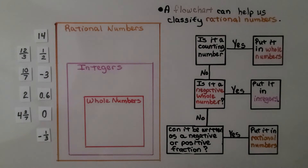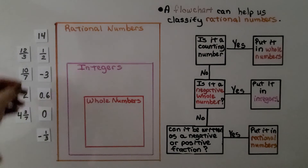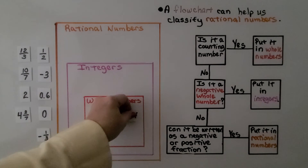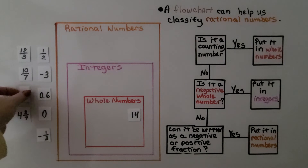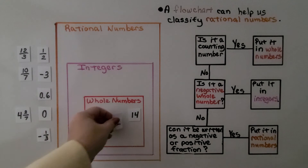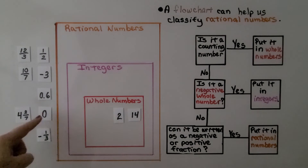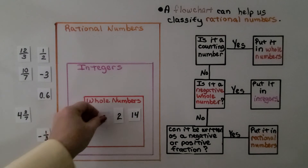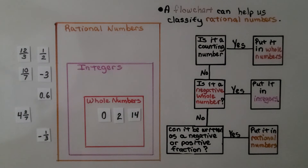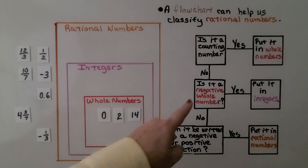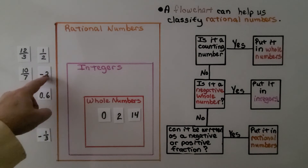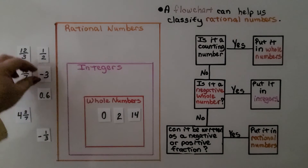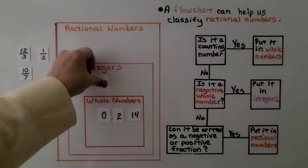The first thing we ask is: is it a counting number? Fourteen is a counting number — that's a whole number. Two is a whole number, that's a counting number. And zero — that's a counting number. So we know those are the whole numbers. I also see that negative three is a negative whole number, so we put that into integers.